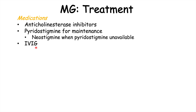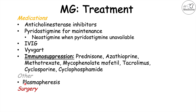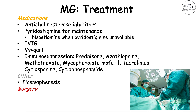IVIG (IV immunoglobulin G) may also be used, as well as VIVGART. In some cases, immunosuppression agents are used, including prednisone, azathioprine, methotrexate, mycophenolate mofetil, tacrolimus, cyclosporine, and cyclophosphamide. Other possible treatment methods include plasmapheresis and surgery. In the case where a patient has a thymoma, they could undergo a thymectomy — removal of the thymus gland — which in some patients may actually be curative.